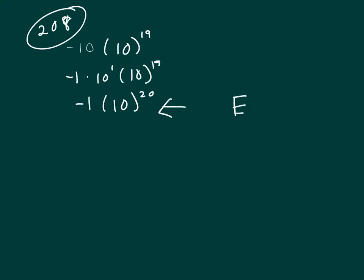You might, that's E, you might compare it to D. Negative 10 to the 20th is going to be smaller than negative 10 to the 19th.